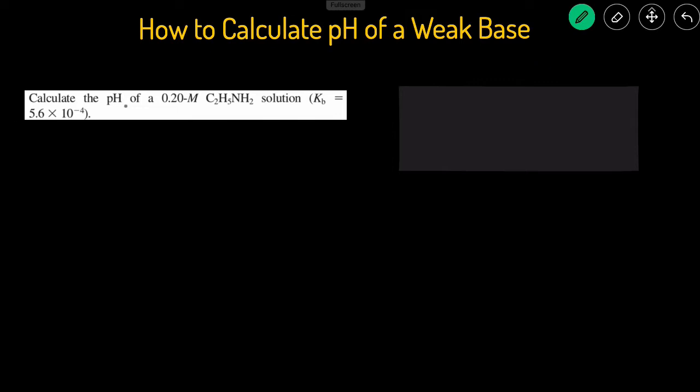This problem asks us to calculate the pH of 0.2 molar C2H5NH2 solution. So we know this is a weak base because it gives us the Kb value.